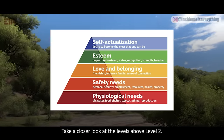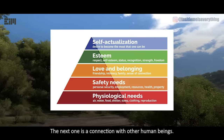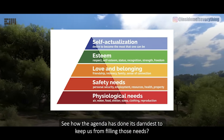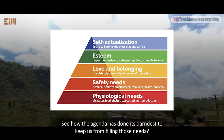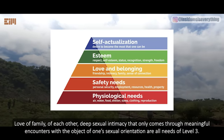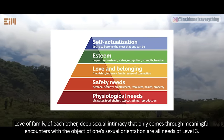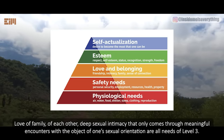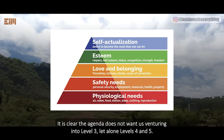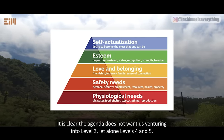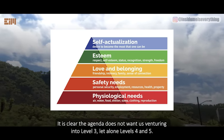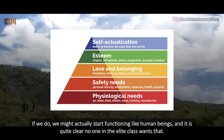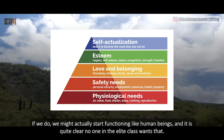Take a closer look at the levels above level 2. The next one is a connection with other human beings. See how the agenda has done its darndest to keep us from filling those needs. Love of family, of each other, deep sexual intimacy that only comes through meaningful encounters — these are all needs of level 3. It is clear the agenda does not want us venturing into level 3, let alone levels 4 and 5. If we do, we might actually start functioning like human beings, and it is quite clear no one in the elite class wants that.